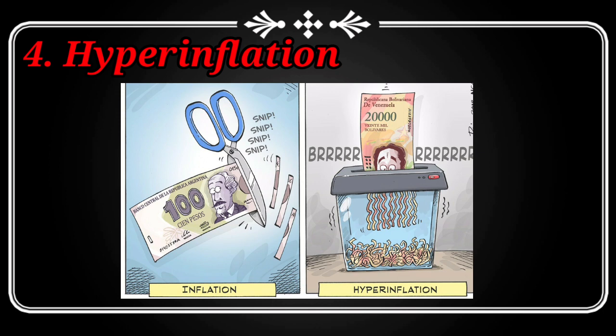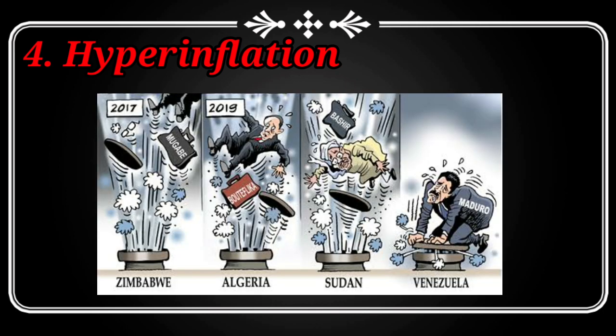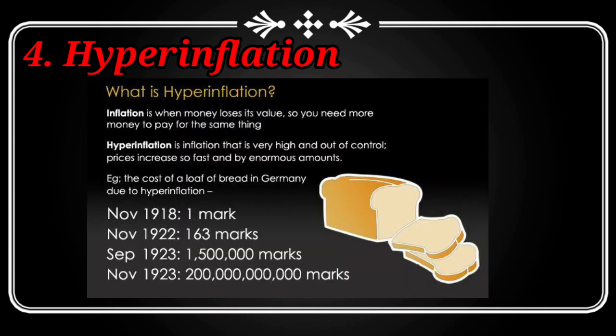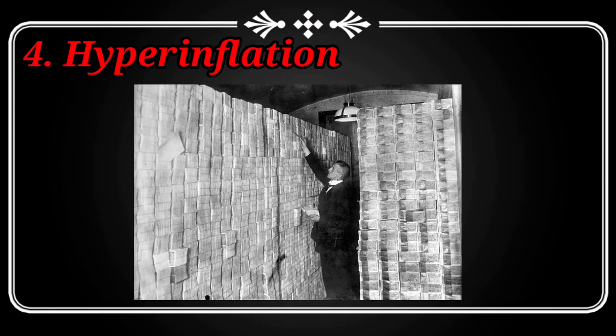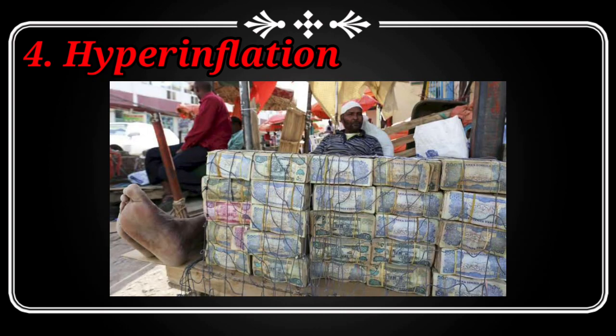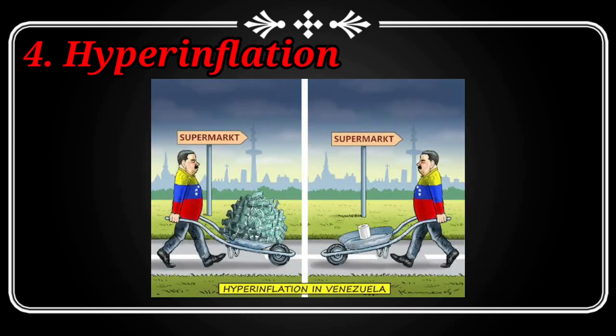Our last type is hyperinflation. Hyperinflation is when prices skyrocket more than fifty percent a month. It is very rare and very dangerous in nature. In fact, most examples of hyperinflation occur when governments print money to pay for wars. Examples of hyperinflation include Germany in the 1920s after World War One, Zimbabwe in the 2000s, and Venezuela in the 2010s.